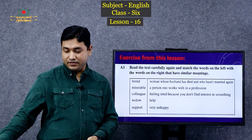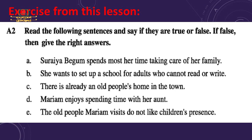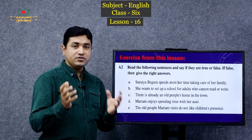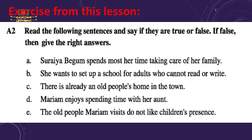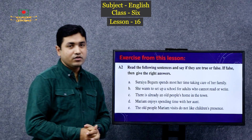Now, read the following sentences and say if the statements are true or false. If false, give the right answer. Statement A: Suraya Begum spends most of her time taking care of her family. Statement B: She wants to set up a school for adults who cannot read and write. Statement C: There is already an old people's home in the town. Statement D: Moriam enjoys spending time with her aunt. Statement E: The old people Moriam visits do not like children's company. Let's find out the answers.